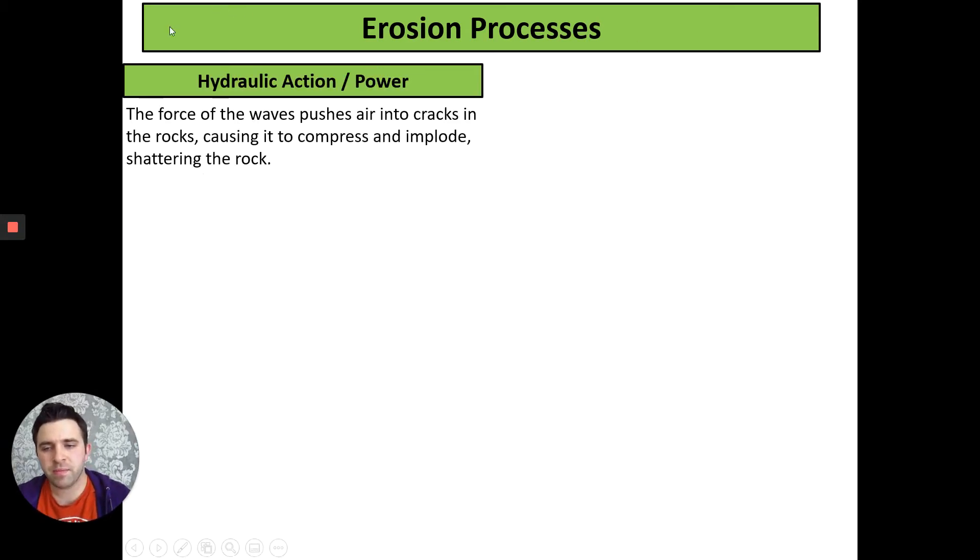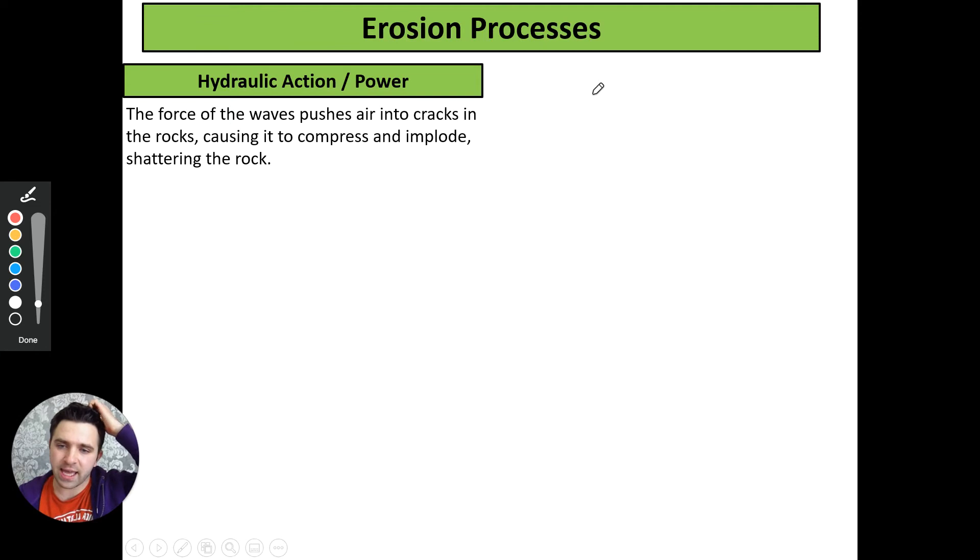Our first erosive process is hydraulic power or hydraulic action. Either one is fine, the exam board likes either of these. How hydraulic action works? It's the force of our waves pushing air into cracks in the rock. This causes the air inside to compress really tightly and almost implode, which then shatters the rock around it. Let's get a quick diagram of this drawn. We've got our cliff face here with a crack in it and our waves. Our water is coming in this way, forcing little air bubbles into this crack which implode and cause little pieces to shatter, and our crack will get wider.